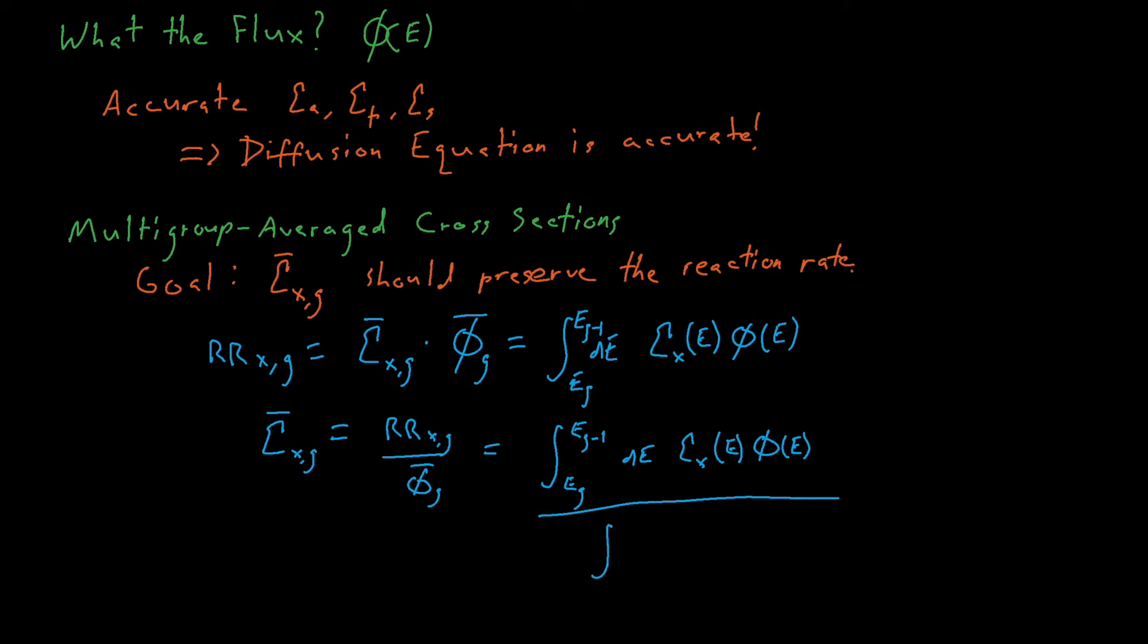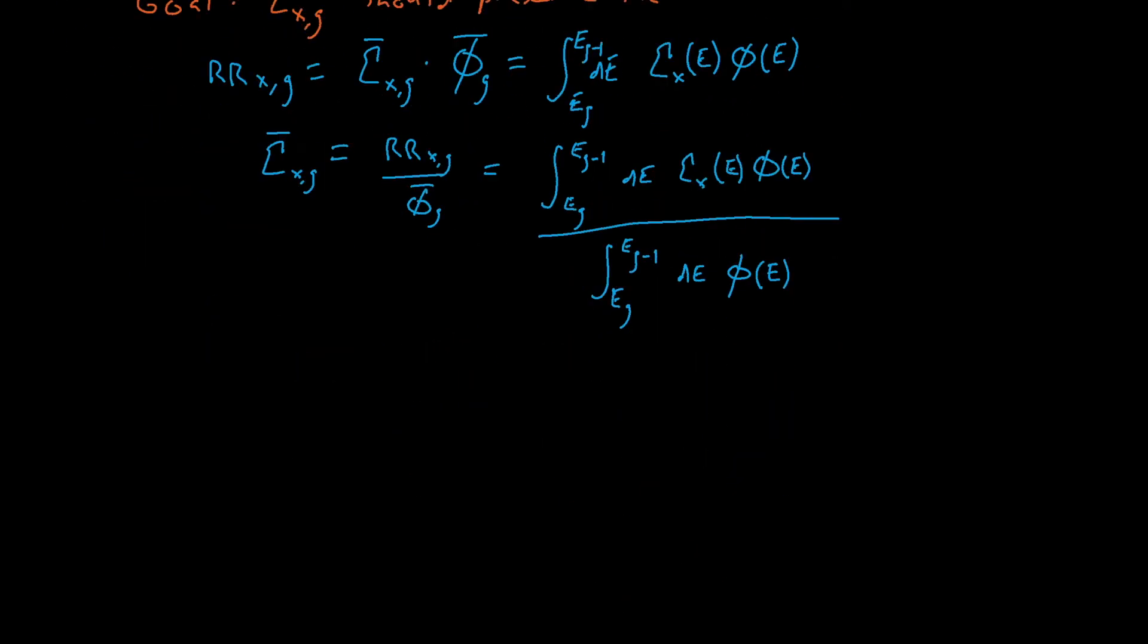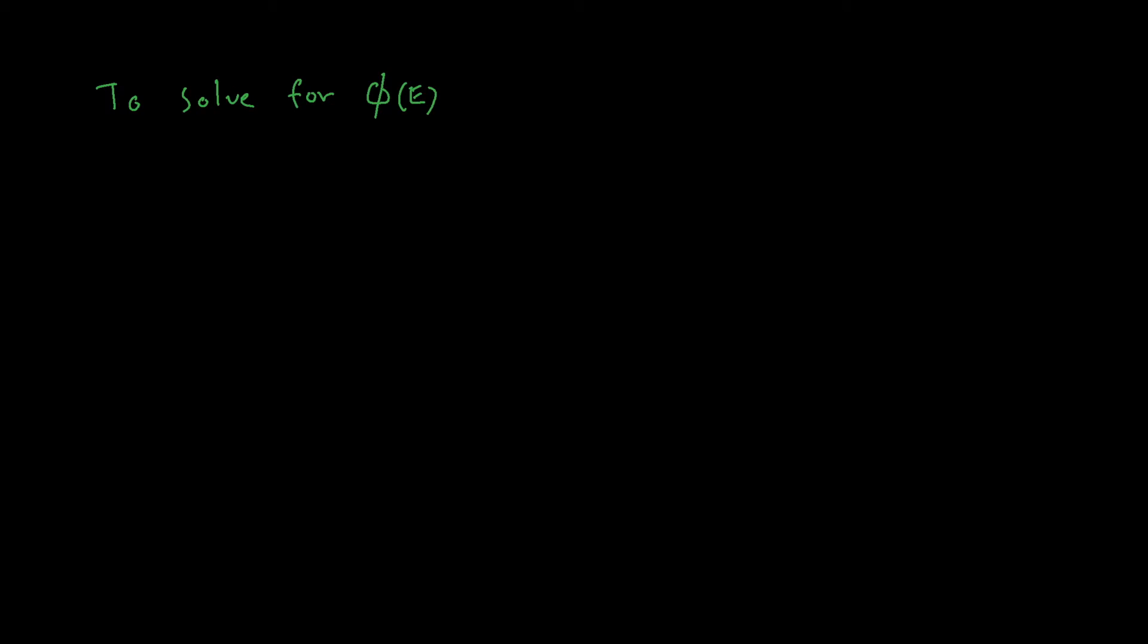Thus, we can rearrange the terms to give that the multigroup average cross-section is equal to our reference reaction rate divided by our multigroup average flux, which is also the ratio of these two integrals here. So what is our energy-dependent flux, and how does phi vary as a function of energy? If we have a good understanding of the energy-dependent flux, we should be able to estimate our reaction rate reasonably well.